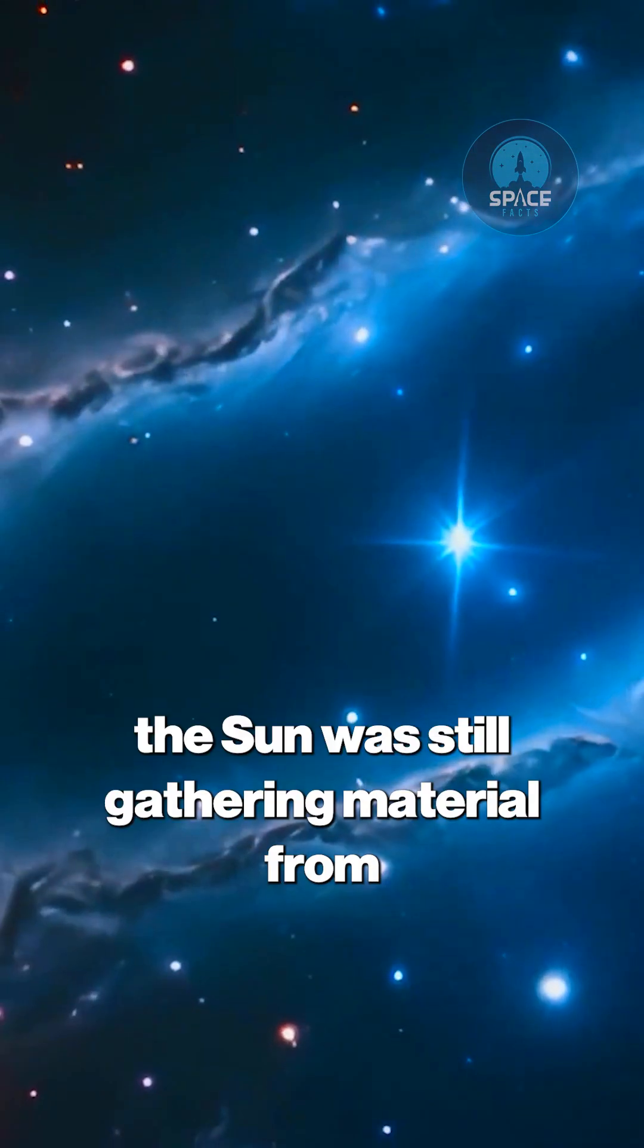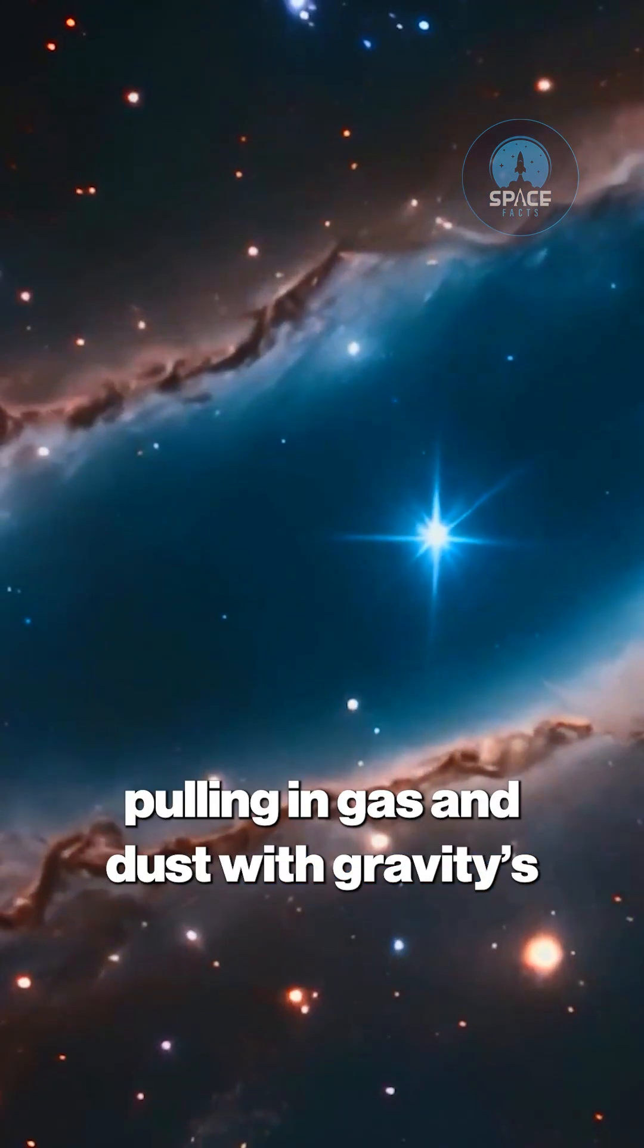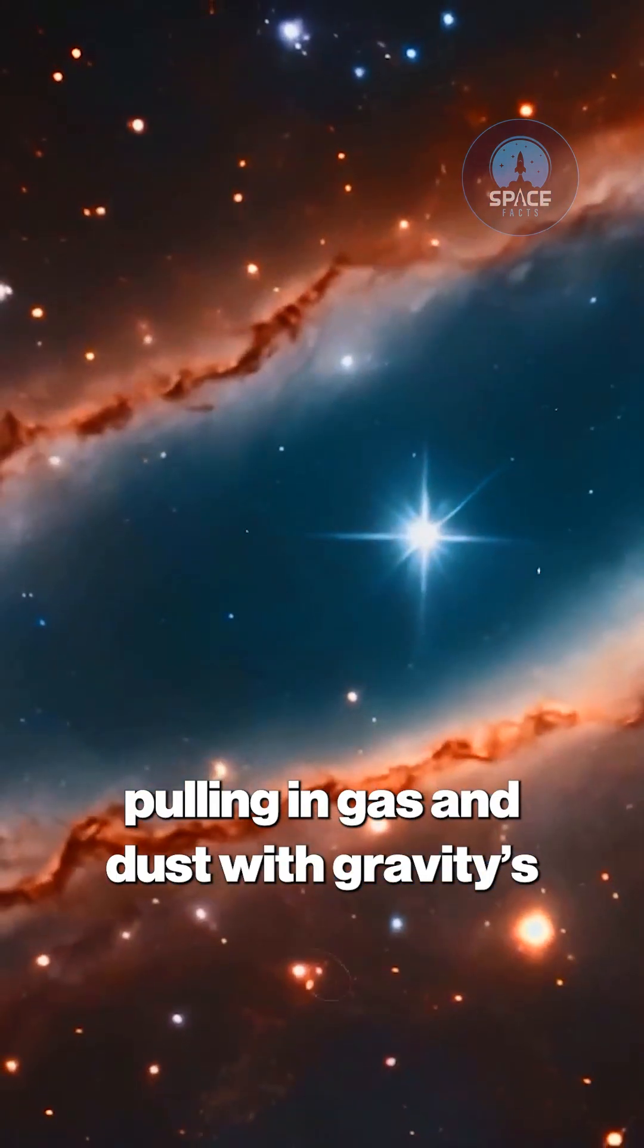During this phase, the Sun was still gathering material from its cosmic nursery, pulling in gas and dust with gravity's relentless grip.